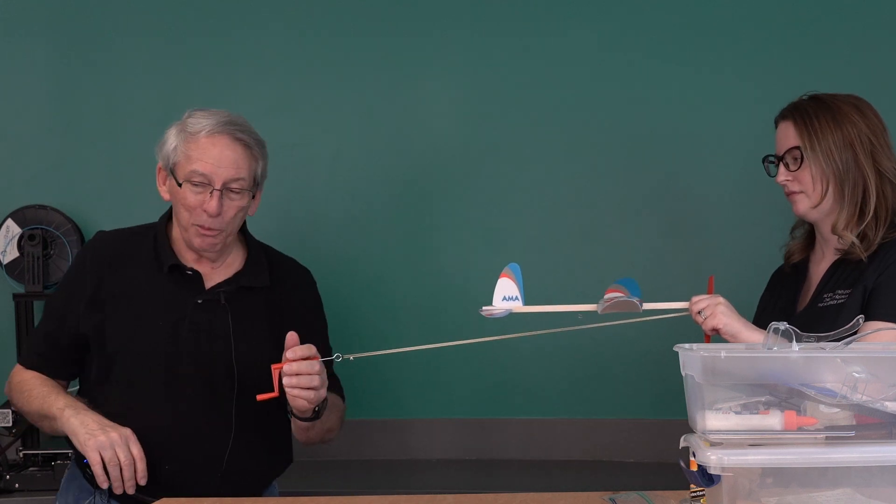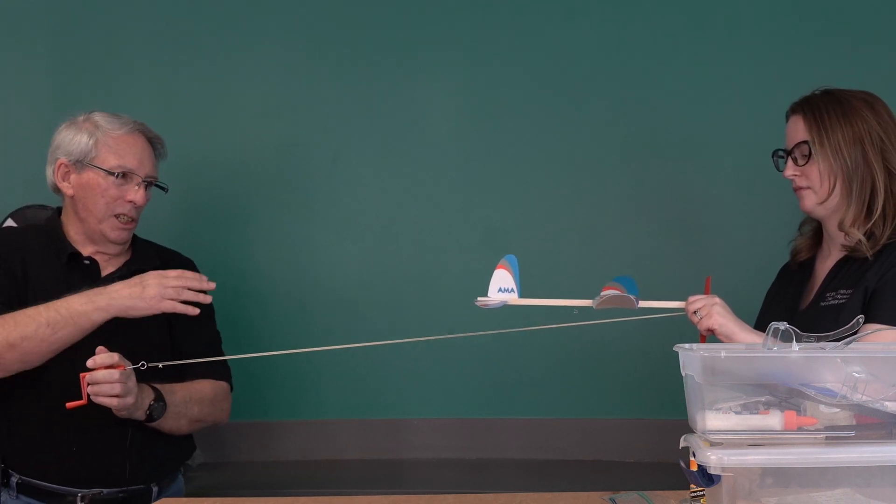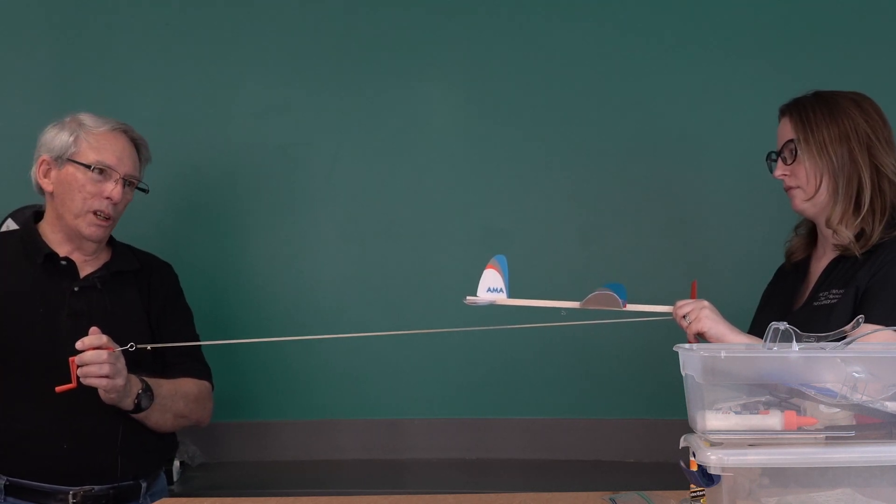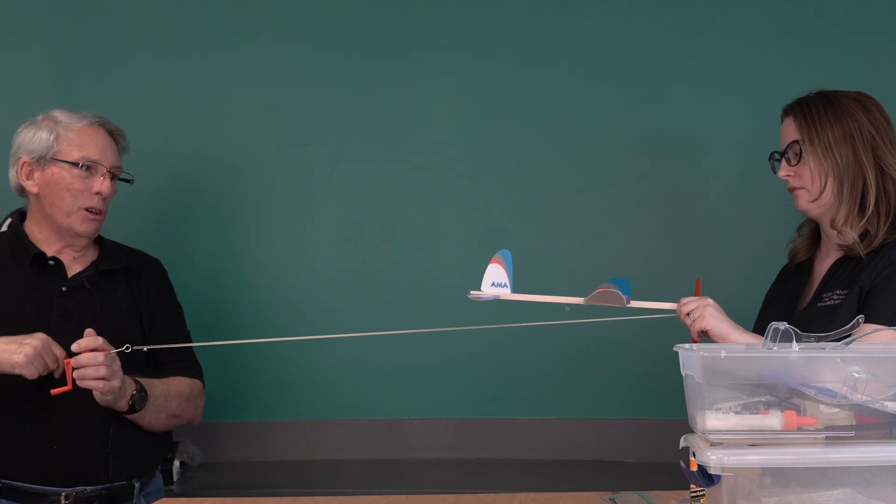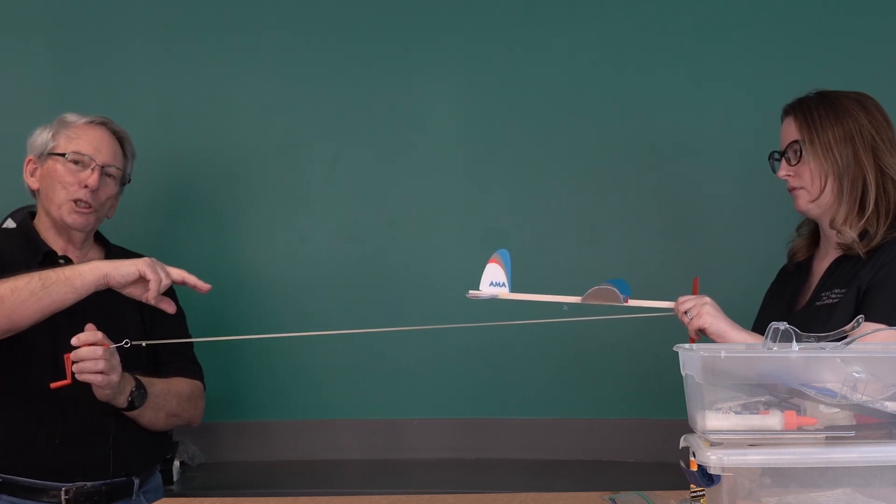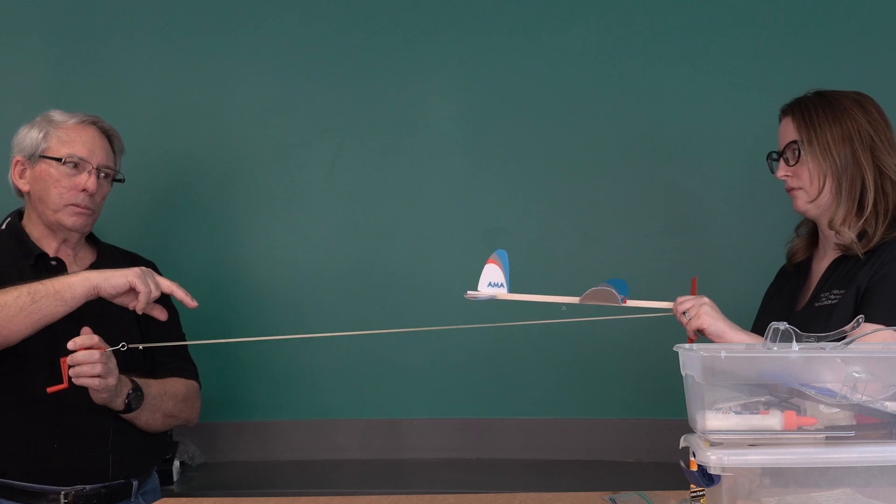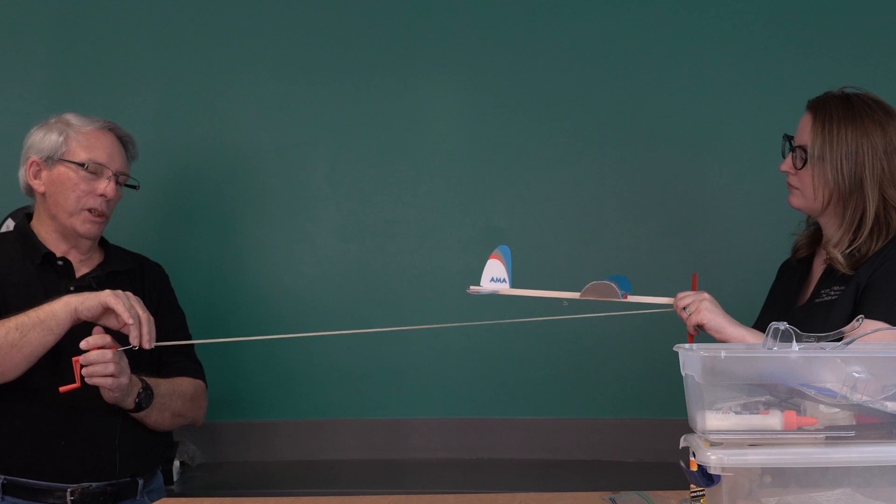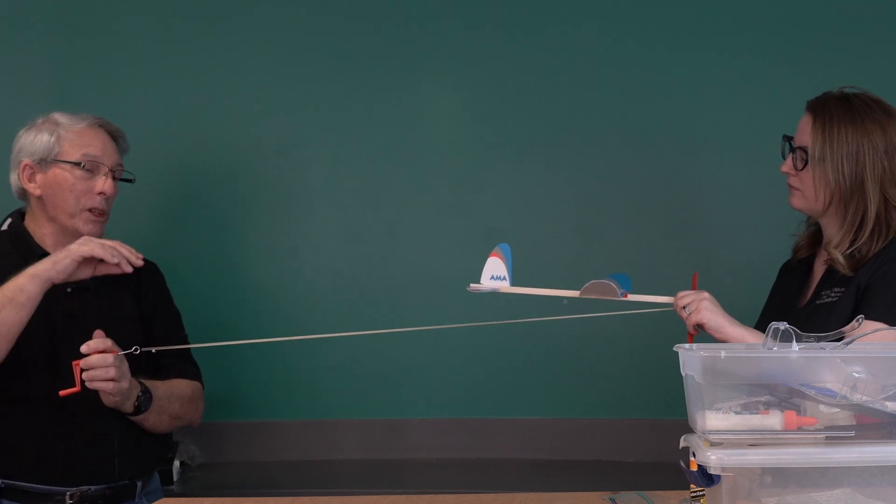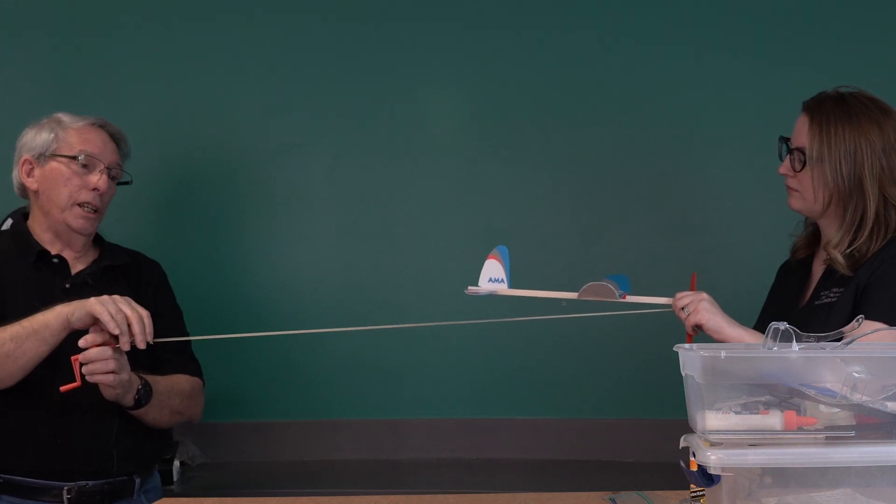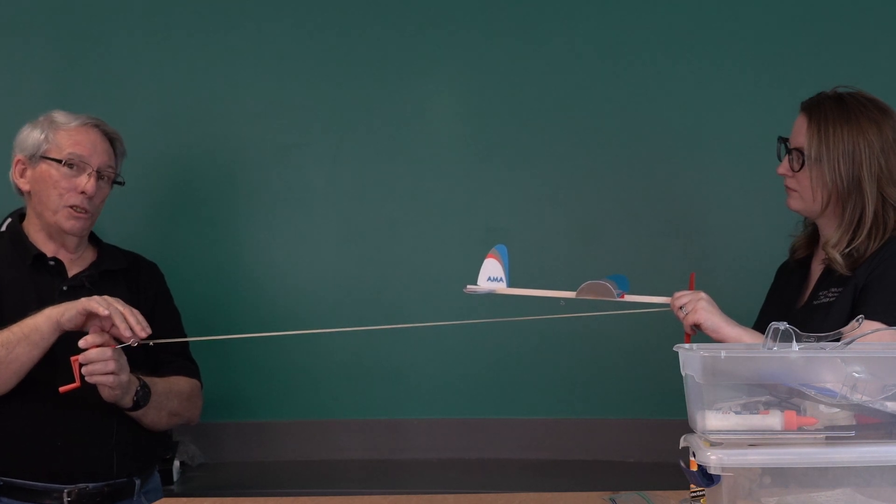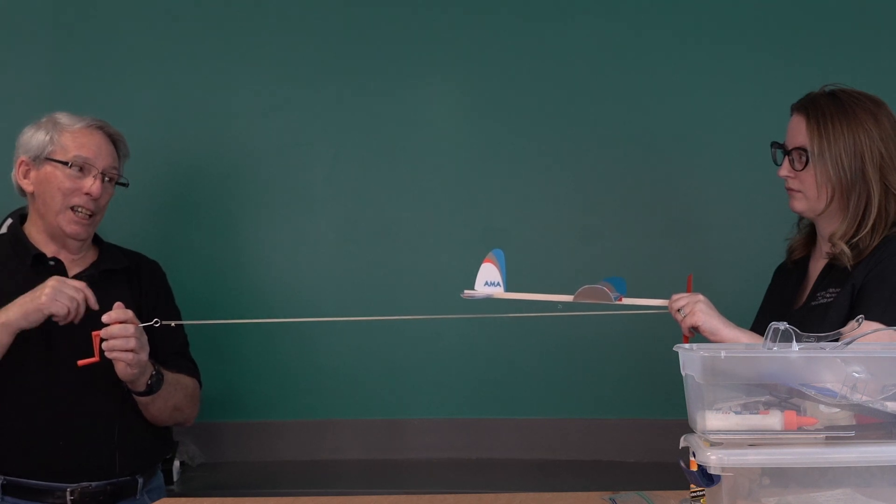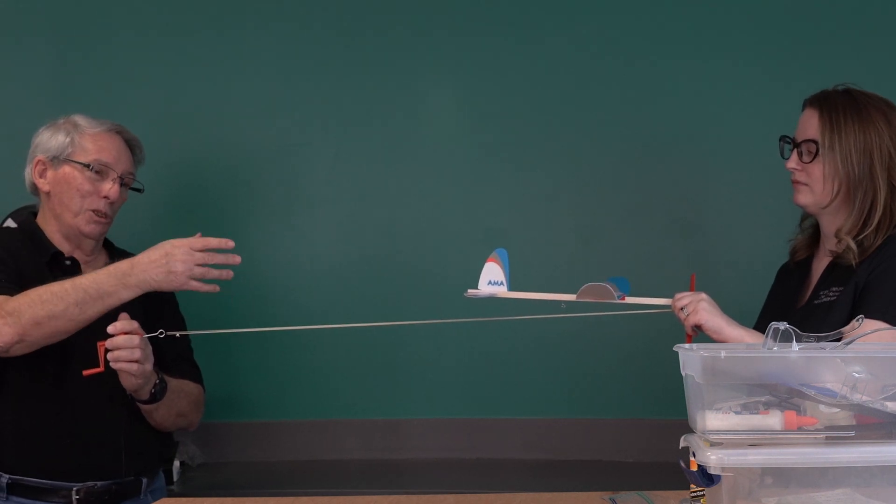So now I'll stretch the motor, get it stretched out nice and start winding. This winder is a 20 to 1 ratio, which means for every time I crank the winder, the motor is wound 20 turns. The 2-gram motor for this airplane with this 332-size rubber will probably take anywhere from 1,500 to 1,800 turns. So I could actually crank it 90 times here to equal 1,800.